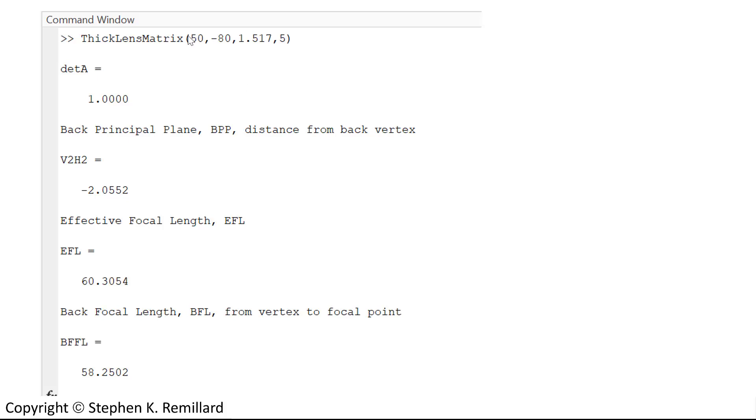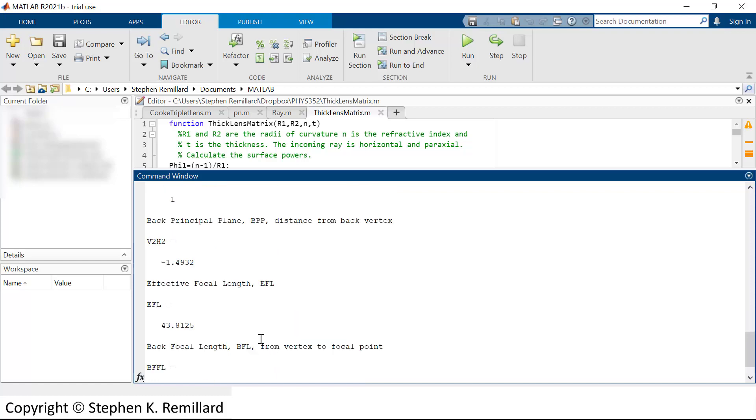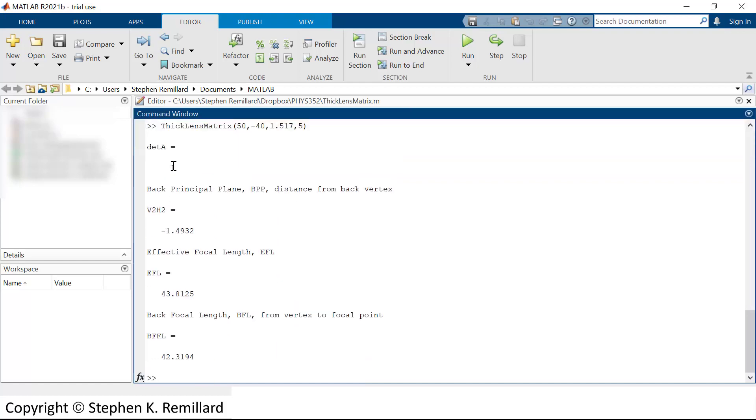But now I have a function. I can just change those out. So let's look at that. Let's change the back refracting surface from minus 80 to minus 40. And we get all new numbers. But the important thing is the system matrix still has a determinant of 1. But now the effective focal length has been changed to 43.